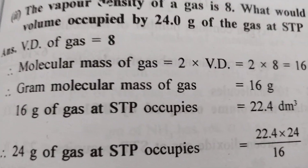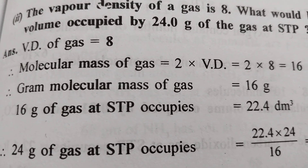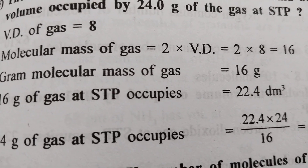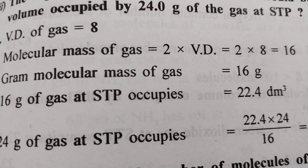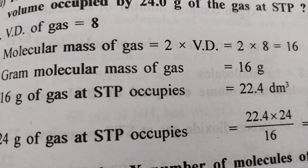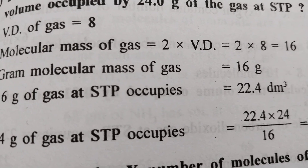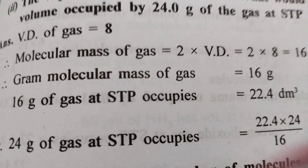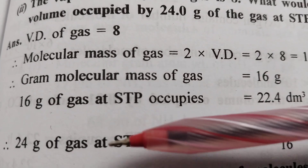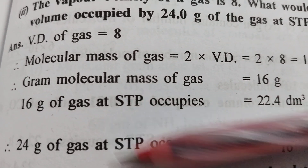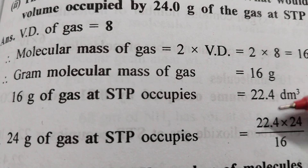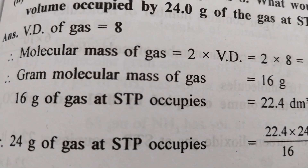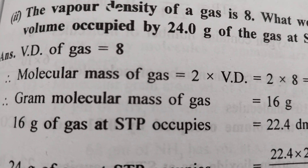Most importantly: molar mass is equal to 2 into vapor density. If you know the molar mass of any gas, it occupies 22.4 decimetre cube at STP. So 16 grams occupies 22.4, and for 24 grams the volume is 24 by 16 into 22.4. Please like, share, and subscribe for more competitive chemistry.